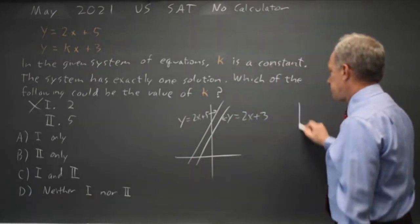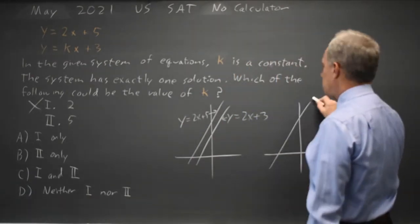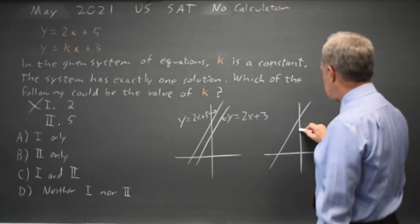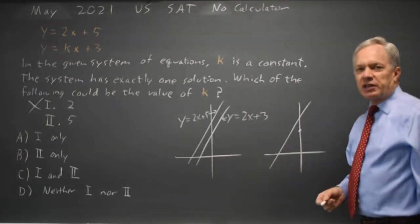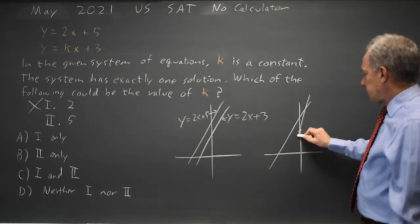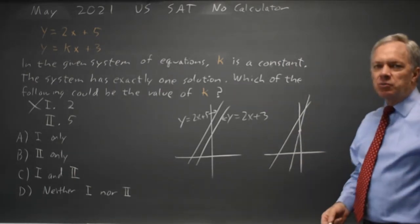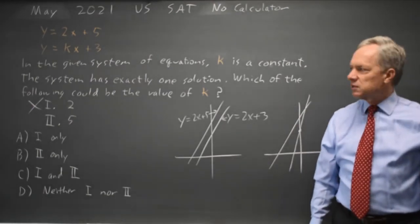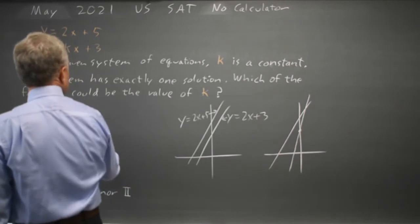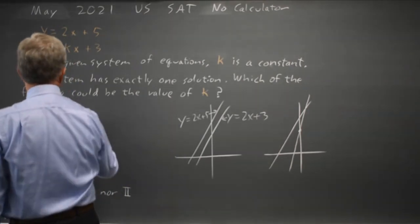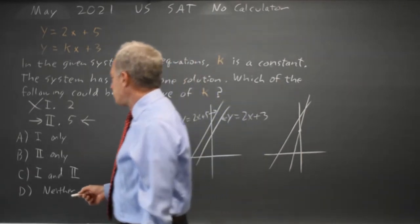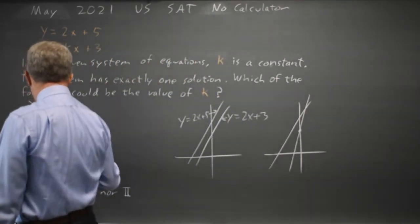If you look at y equals 2x plus 5 and y equals 5x plus 3, 5x plus 3 has a lower y-intercept but a steeper slope, and they will intersect in one point, the point of intersection is the solution. So choice 2 could be the value of k if there's exactly one solution, and choice 1 could not. The correct answer is B.